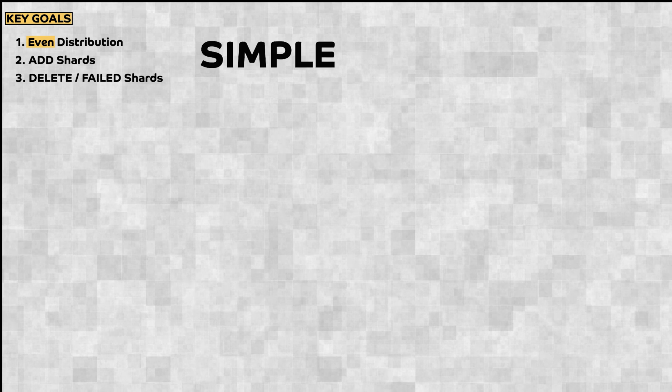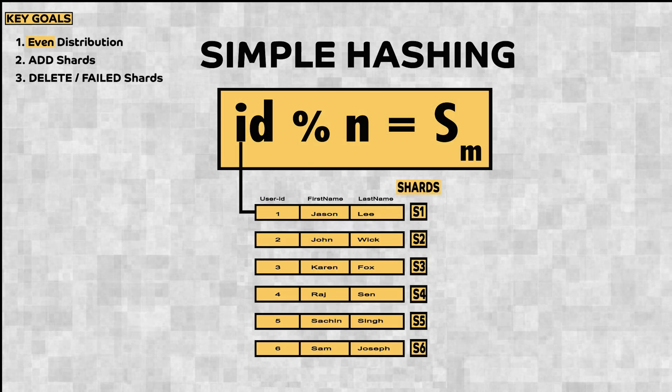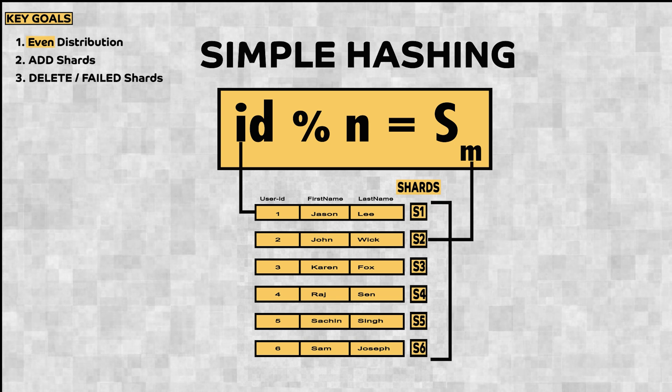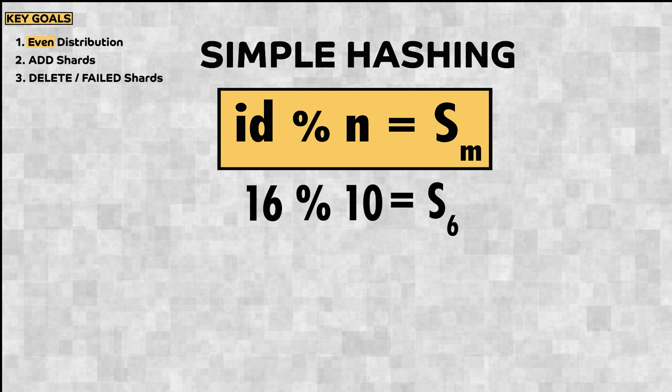With these key goals in mind, there are multiple design algorithms to implement sharding. The brute force design approach is to use simple hashing, where id is the user id or primary key and n is the number of nodes and m is the shard number. So if you have 10 shards, information of user id 16 will be stored in shard 6.